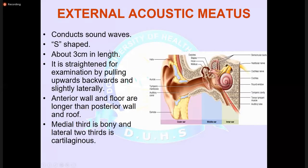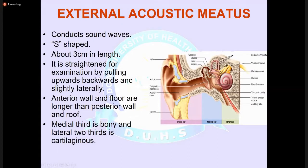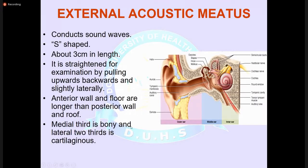The external auditory canal conducts sound waves. It is S-shaped in structure, approximately 2.5 centimeters long, and is straightened for examination by pulling the pinna upwards, backwards, and slightly laterally. The anterior wall and floor are longer than the posterior wall and roof. The medial third is bony and the lateral two-thirds is cartilaginous.